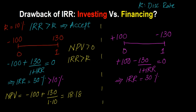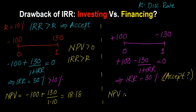Should you invest in this project using the IRR rule? The standard IRR rule would say yes — 30% is more than 10%, IRR is greater than discount rate, so you might say accept. But I'm going to put a question mark here. Because if you actually calculated the NPV of this project at 10%, you get positive 100 minus 130 divided by 1.10. That is the exact opposite of what we did before — so you get negative $18.18.